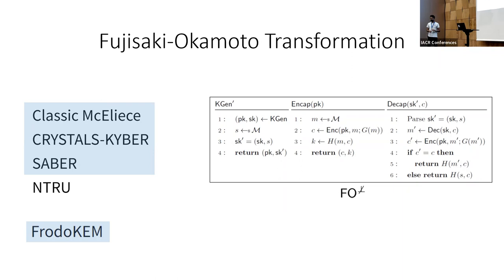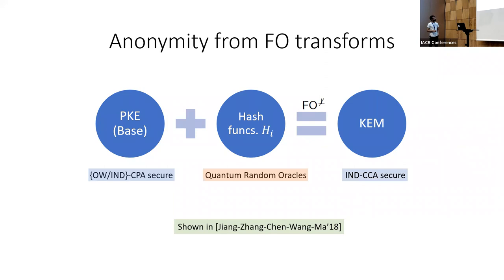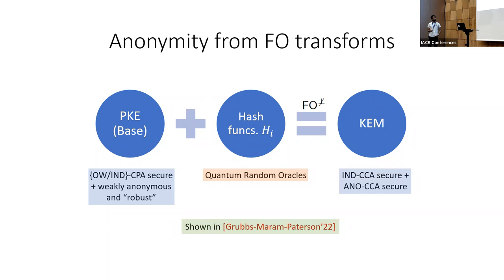It was shown by Jiang et al. in 2018 that the standard FO transformation does result in IND-CCA secure KEMs in the quantum random oracle model. In our work, we showed that if the base PKE scheme satisfies some additional mild security properties — namely weak anonymity and some kind of weak robustness — then the resulting KEM is also anonymous. I won't go into the exact details, but for the purpose of this presentation you can think of them as CPA-style weak properties that yield strong anonymity guarantees in the end.